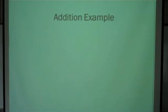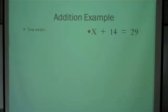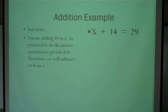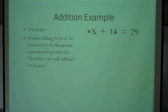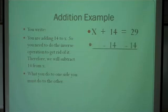We're going to try two of each. You write x plus 14 equals 29. Notice what's being done to the x is we're adding 14 — that's what we want to get rid of. You're adding 14 to x, so you have to do the inverse operation to get rid of it. Therefore, we subtract 14 from x. What you do to one side, you must do to the other.